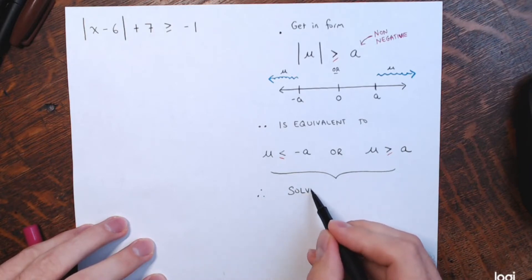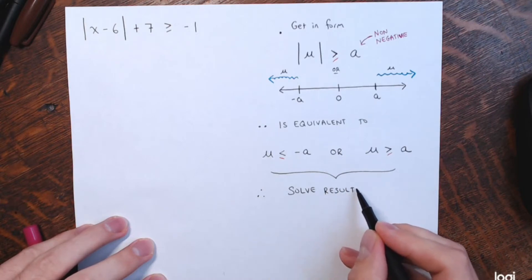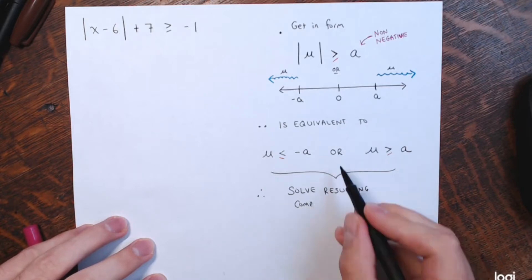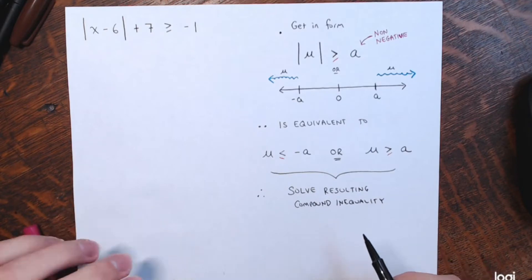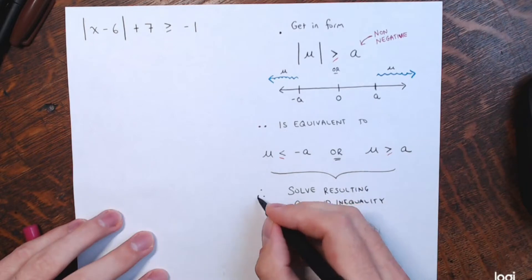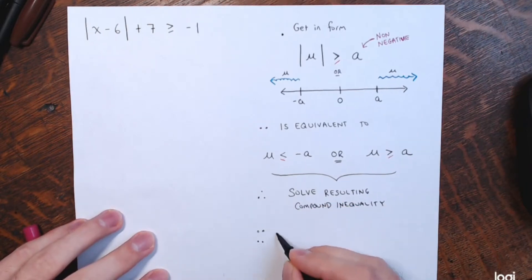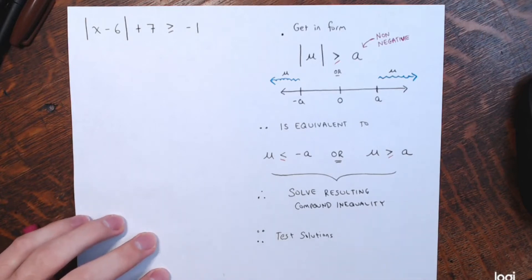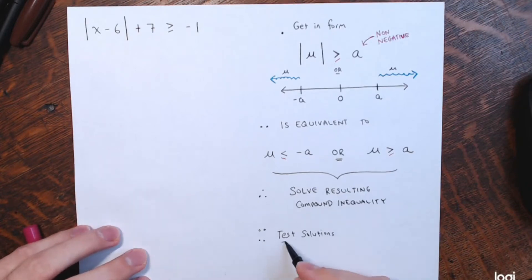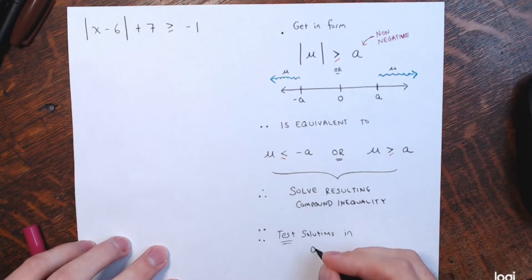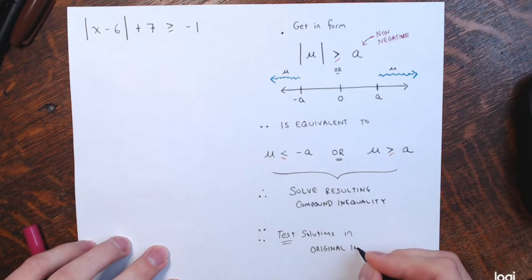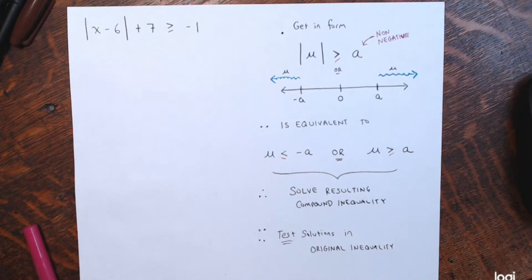After isolating the absolute value and getting |u| > a (a non-negative number), I write an equivalent compound inequality — an OR compound inequality. This statement is equivalent to: u is less than negative a, OR u is greater than a. If the or-equal-to symbol is in the original, that shows up here too. Then you solve the resulting OR compound inequality. Finally, test solutions at the end — plug a few back into the original inequality. Since there are typically infinitely many solutions, just test one or two to confirm.